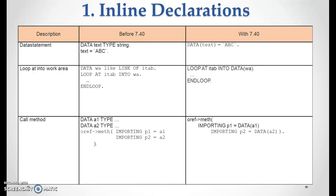But in inline declarations we write: data in bracket, text equals to ABC. For loop at, we used to declare the work area as data WA like line type of ITAB, then write loop at ITAB into work area. But in inline declarations we write: loop at ITAB into data WA. So we are declaring the work area then and there itself within the loop statement.